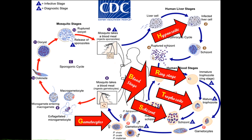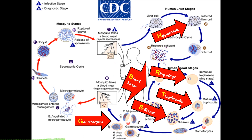Please take note of the first letters: H for hypnozoite, R for ring stage, T for trophozoite, S for schizont, B for blood stage, and G for gametocyte, since we will be using these first letters in our discussion later when we are discussing antimalarial drugs.